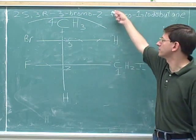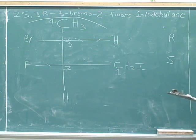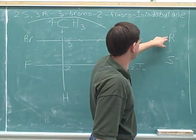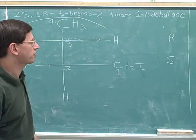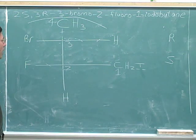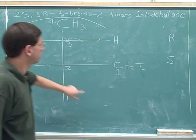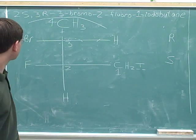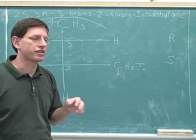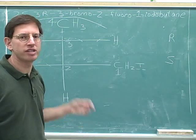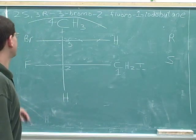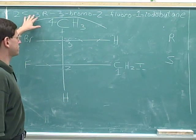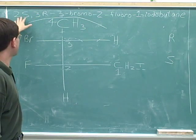I've written the complete IUPAC name at the top of the board. We have to include the R and S stereochemistry in this name — that's the whole reason we determined whether each stereocenter was R or S. The number 2 carbon has S stereochemistry (2S) and the number 3 carbon has R configuration (3R). When there's only one stereocenter, you say R or S without a number, but when there are two stereocenters, you must number each one in the name so you know which is S and which is R.